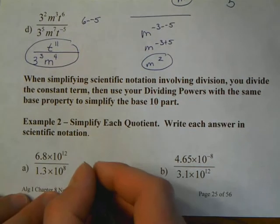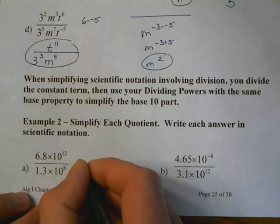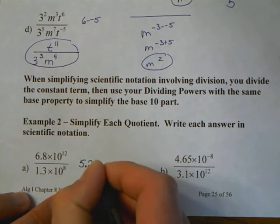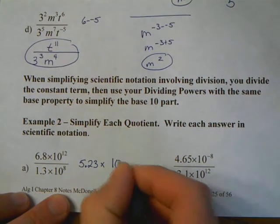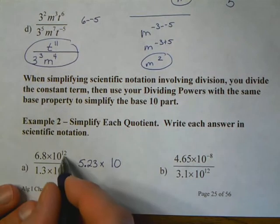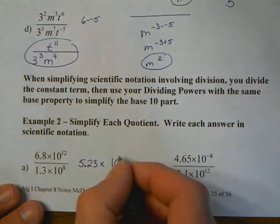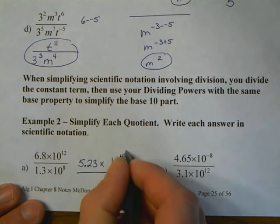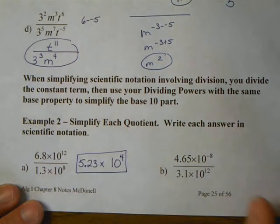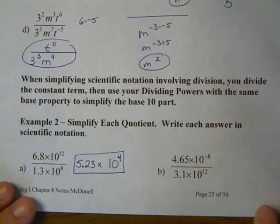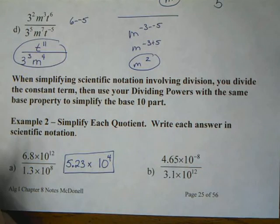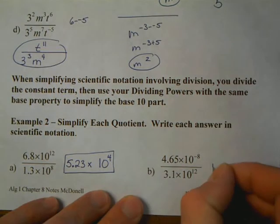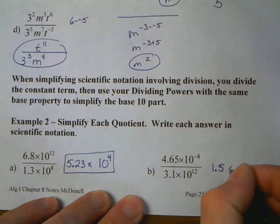We're going to divide the numbers in front, and then we're going to deal with the exponents in back as a different. So, I'm going to start by saying, what is 6.8 divided by 1.3? On my calculator, that's 5.23 with a number of other decimals, which I'm going to not worry about. Then I'm going to say, times 10 to what power? Well, 12 minus 8 is 4, so the answer approximately is 5.23 times 10 to the fourth.